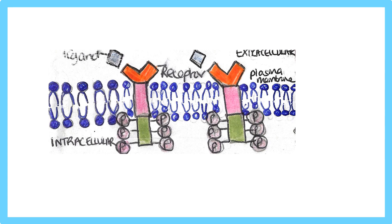Here is a brief simplified diagram showing the ligand, the receptor, and the plasma membrane — the receptor is embedded within the plasma membrane. It is divided into three domains, which we'll discuss further.